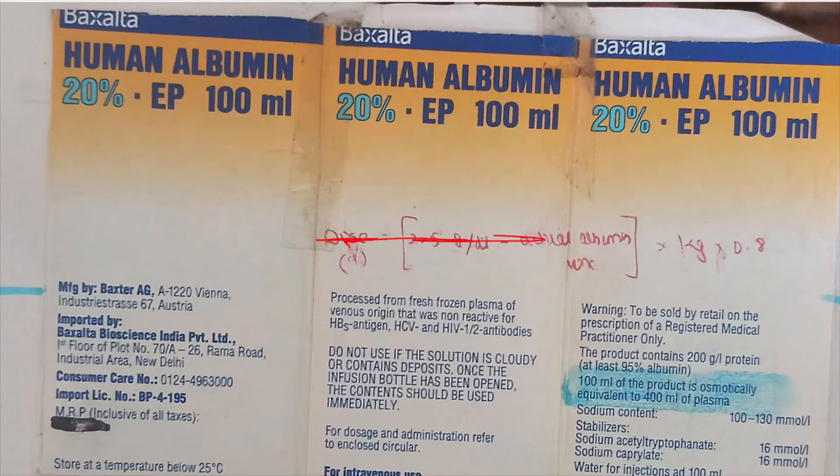This is another labeling, again that I have mentioned as 20%, 100 ml. I want to show the mention over here. See what they have mentioned: 100 ml of product is osmotically equivalent to 400 ml of plasma. That means it is 4 times hyperosmolar to the plasma. So this is very important. And let's see, the sodium content in this is 100 to 130. The sodium is present in the form of sodium acetyltryptophonate and sodium caprylate.